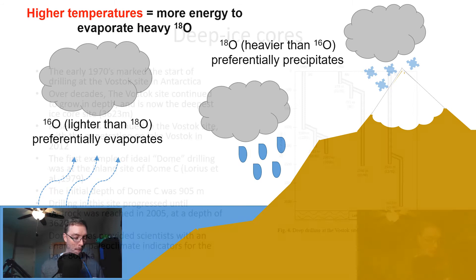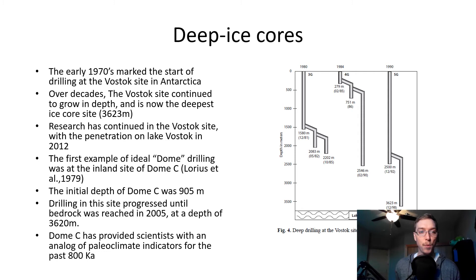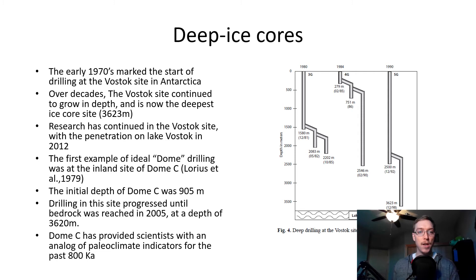The early 1970s marked the start of drilling at the Vostok site in Antarctica. Over decades it continued to grow in depth, now the deepest ice core site at over 3.5 kilometers into the ice sheet. Research continued with penetration of Lake Vostok in 2012 — a subsurface lake area. The first ideal dome drilling was at Dome C, initially 905 meters deep; drilling progressed until bedrock was hit in 2005 at 3,620 meters. Dome C has provided scientists with paleoclimate indicators for the past 800,000 years.